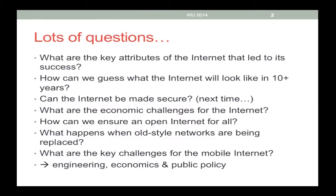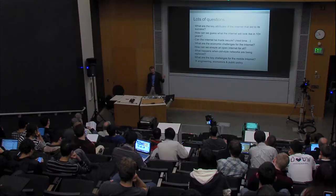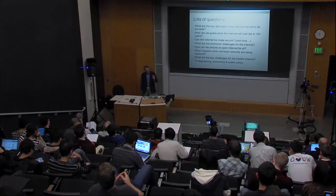I'll briefly talk about what happens when old-style networks are replaced by newer networks. I'll use the particular example of TV networks being replaced, at least in their spectrum usage, by broadband networks. Indeed, one of the phases the internet is undergoing right now is essentially one where many things that were done by separate communication applications are now integrated into the internet. And I'll also talk a bit about some of the mobile internet challenges along the way.